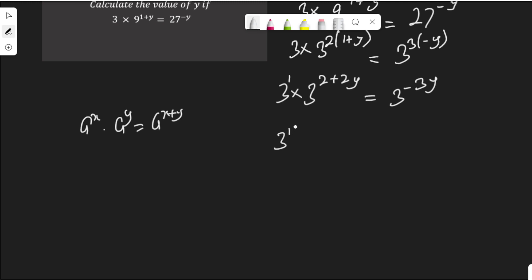I have 3 to the power of 1 plus 2 plus 2y equal to 3 to the power of negative 3y. That's 3 to the power of 3 plus 2y equal to 3 to the power of negative 3y.